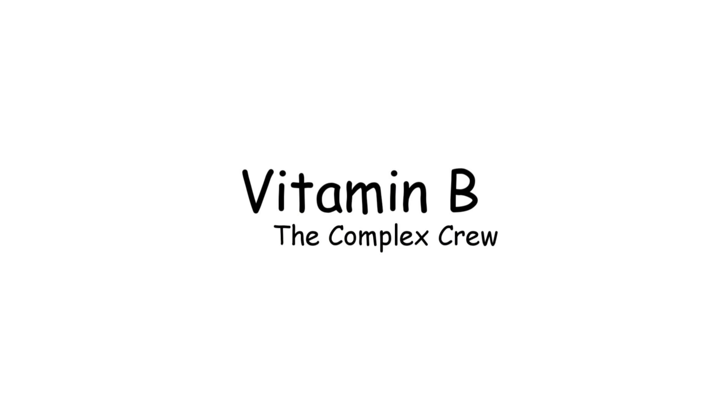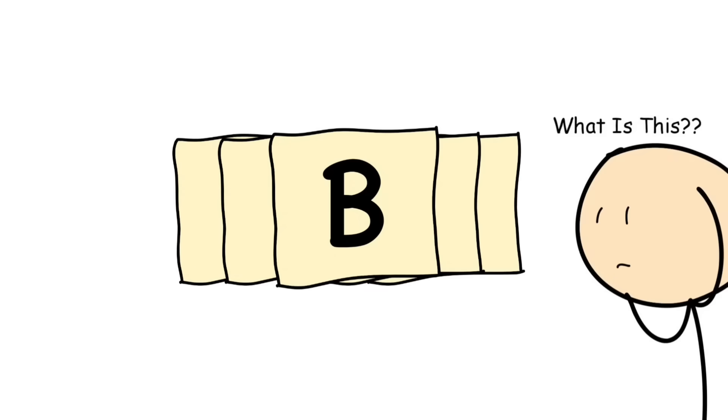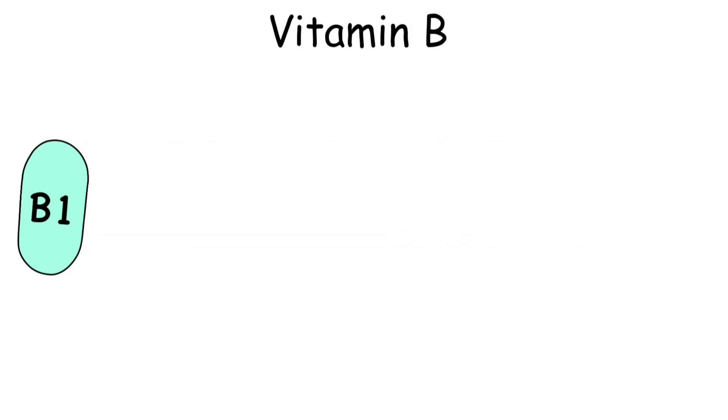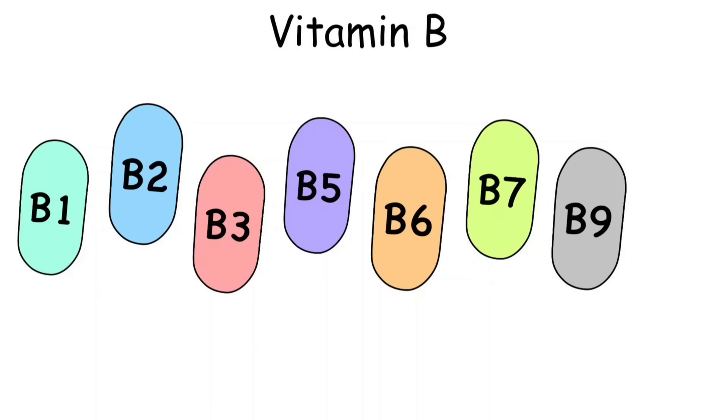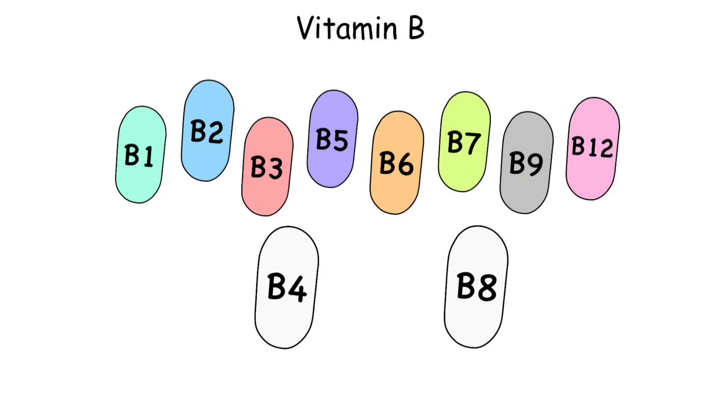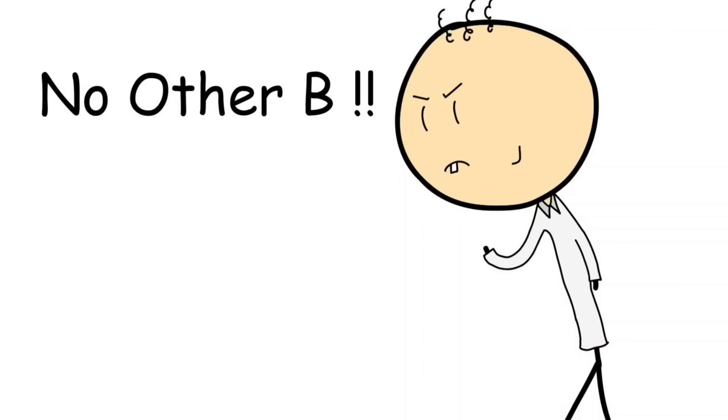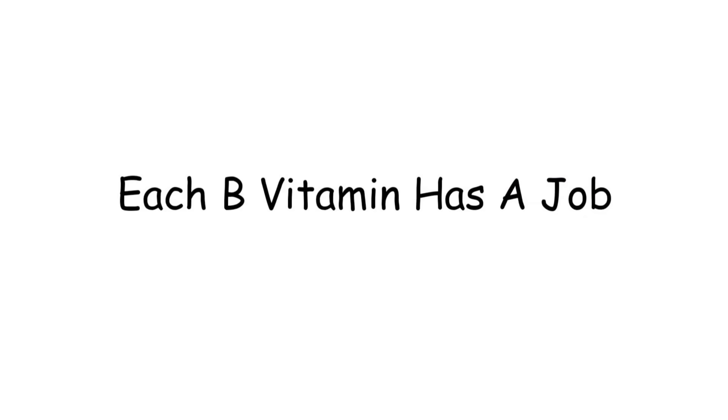Vitamin B isn't just one vitamin. It's an entire extended family, and like most families, it's confusing. There's B1, B2, B3, B5, B6, B7, B9, and B12. Notice there's no B4, B8, B10, or B11. Scientists skipped those like bad movie sequels. Each B vitamin has a job.